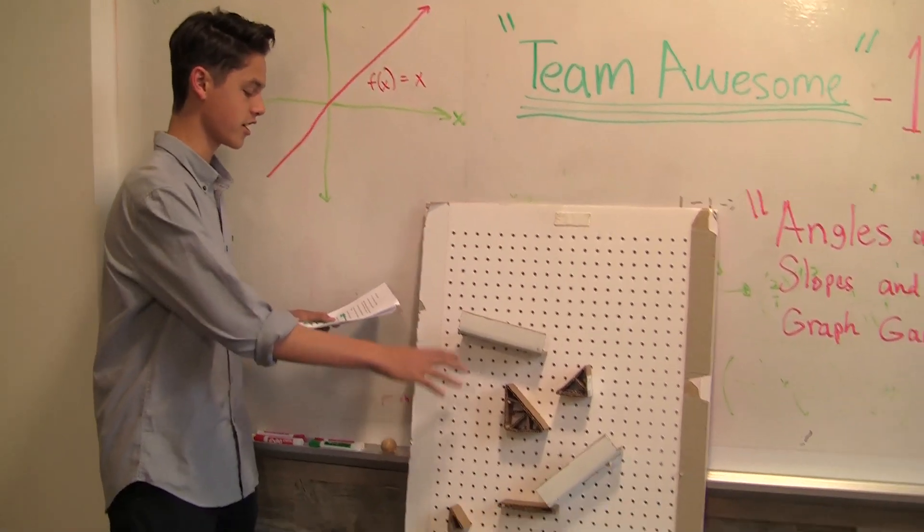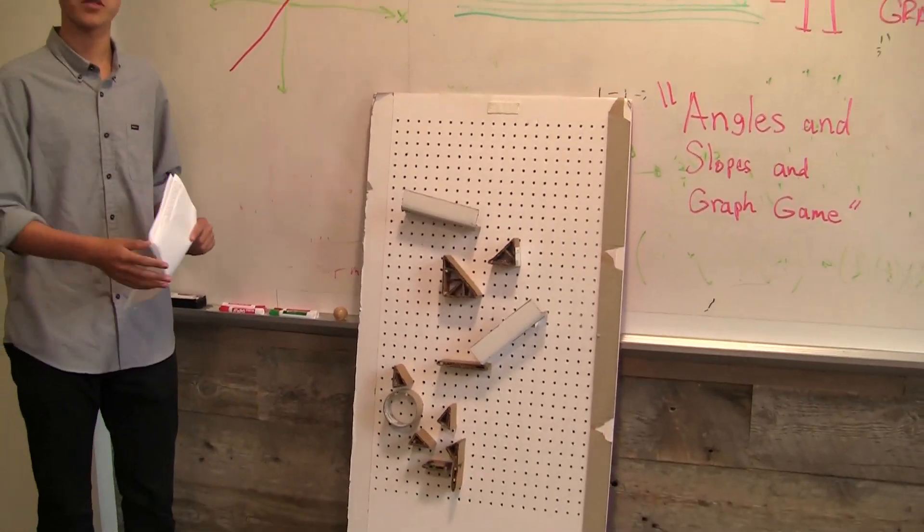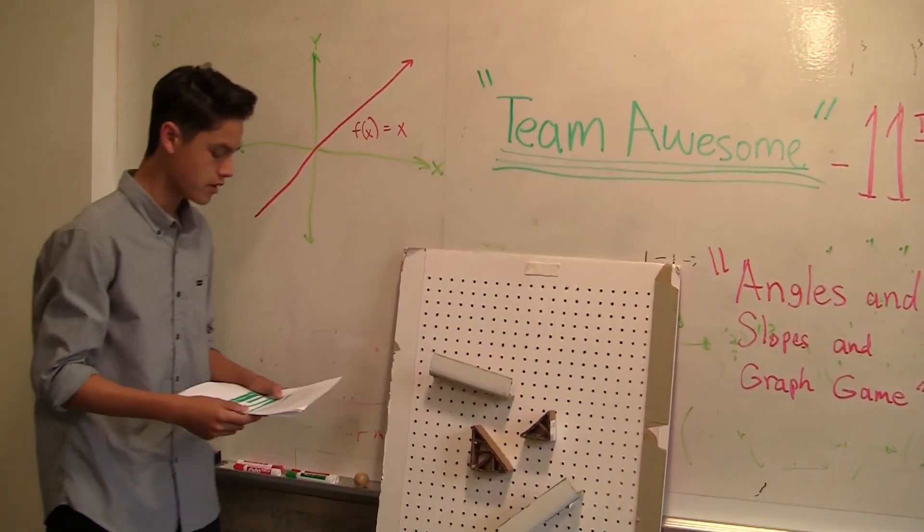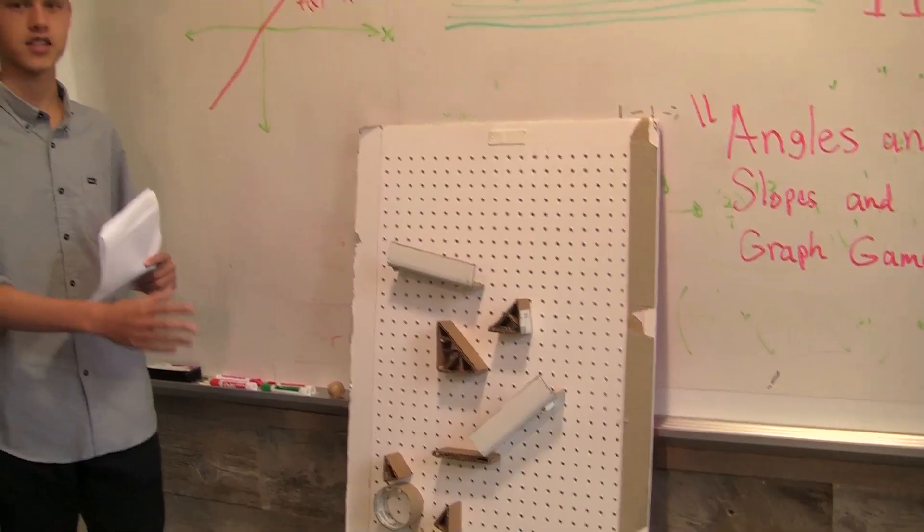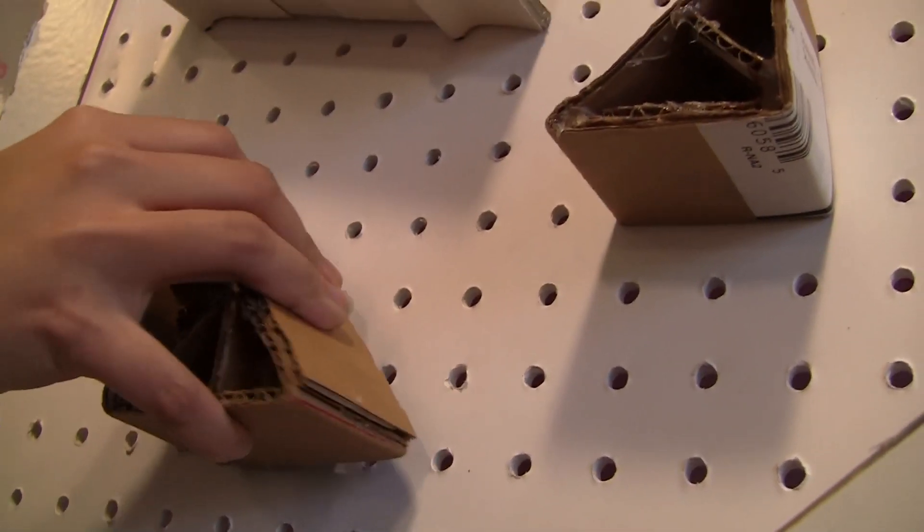So here's the board. We can see it's just a basic pegboard that looks like a graph with some points on it, very similar to the graph over here. So here are some of the pieces, and you can put a lot of these pieces on the board to make different paths and different shapes. A lot of them are removable.